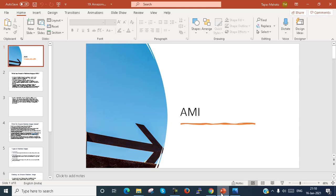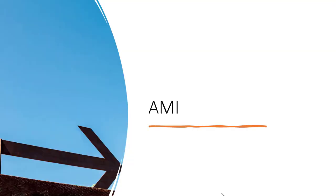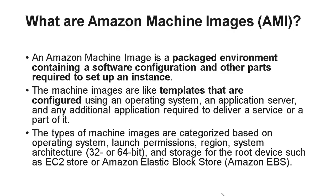The full form of AMI is Amazon Machine Image. An Amazon Machine Image is a packaged environment containing software configurations and other parts required to set up instances. The machine images are like templates that are configured using an operating system, application server, and any additional applications required to deliver a service or part of it.